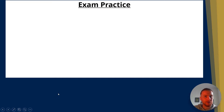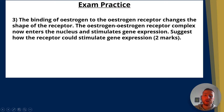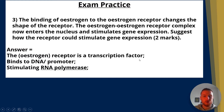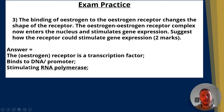Question three: The binding of estrogen to the estrogen receptor changes the shape of the receptor. The estrogen-estrogen receptor complex now enters the nucleus and stimulates gene expression. Suggest how the receptor could stimulate gene expression — worth two marks. The answer: one mark for saying the estrogen receptor is a transcription factor; second mark for saying it binds to the DNA — or more specifically, binds to the promoter — and stimulates RNA polymerase.